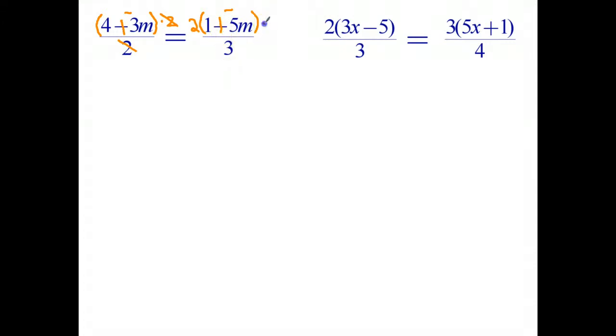Well, the opposite of divide 3 is times 3, and I therefore have to multiply by 3 on the other side as well. The reason for doing that, of course, is 3 divide 3 is equal to 1, so those two operations cancel out. And what we're left with is 3 outside the brackets, 4 plus negative 3m equals 2 outside the brackets, 1 plus negative 5m.